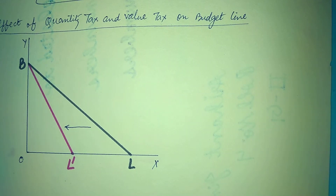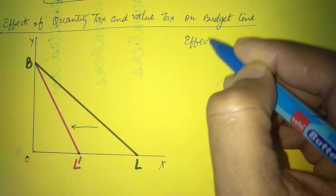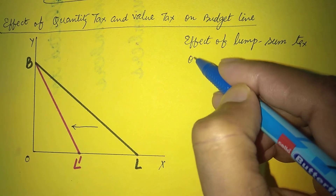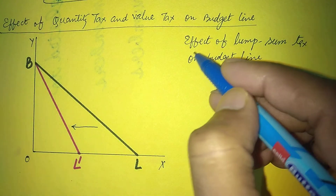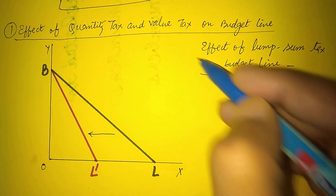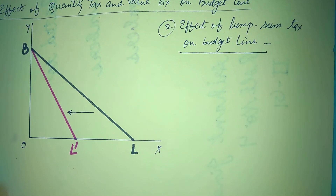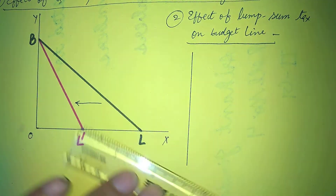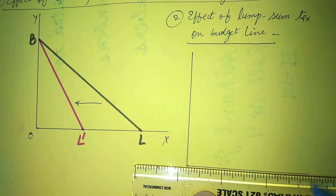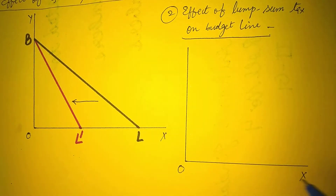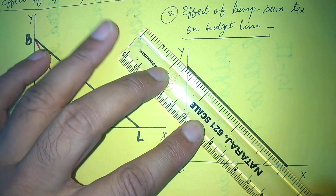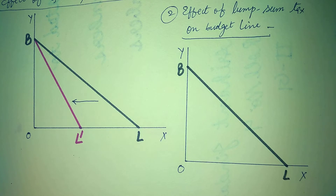Next is the second point: the effect of lump sum tax on the budget line. Suppose these are the axes — horizontal axis and vertical axis. Horizontally we are taking X commodity, vertically Y commodity. Suppose this is the initial budget line, BL.